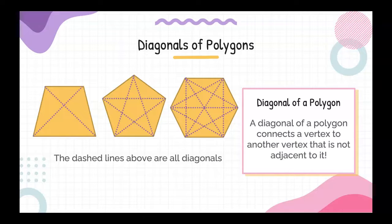If you look at the quadrilateral, pentagon, and hexagon above, you'll see that the dashed lines are all the diagonals of those polygons.